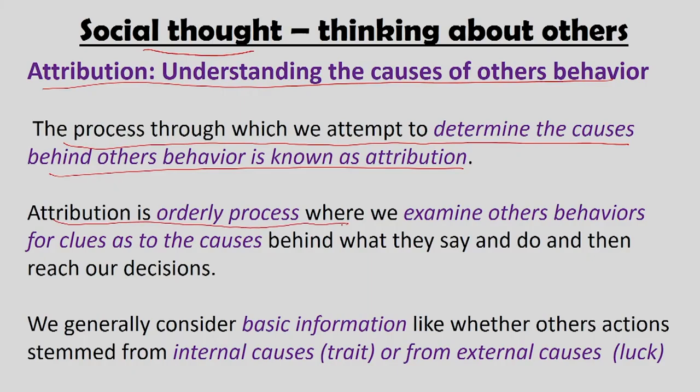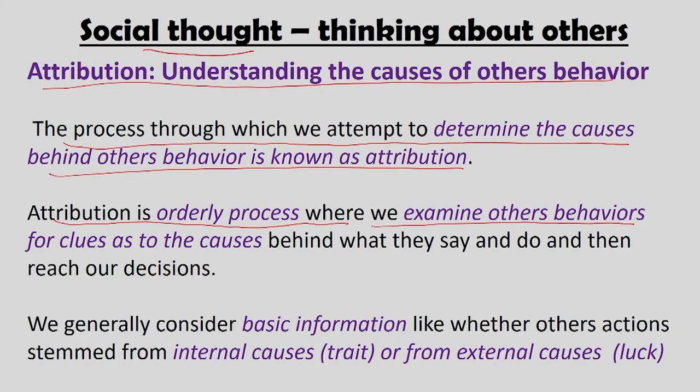Attribution is the process through which we attempt to determine the causes behind others' behaviour. When somebody falls on the road, we immediately assign a reason. The human brain always wants to assign reasons to all events. Attribution is an orderly process — it follows a certain order of facts through which we examine others' behaviour for clues as to the causes behind what they say and do, and then reach our decisions.